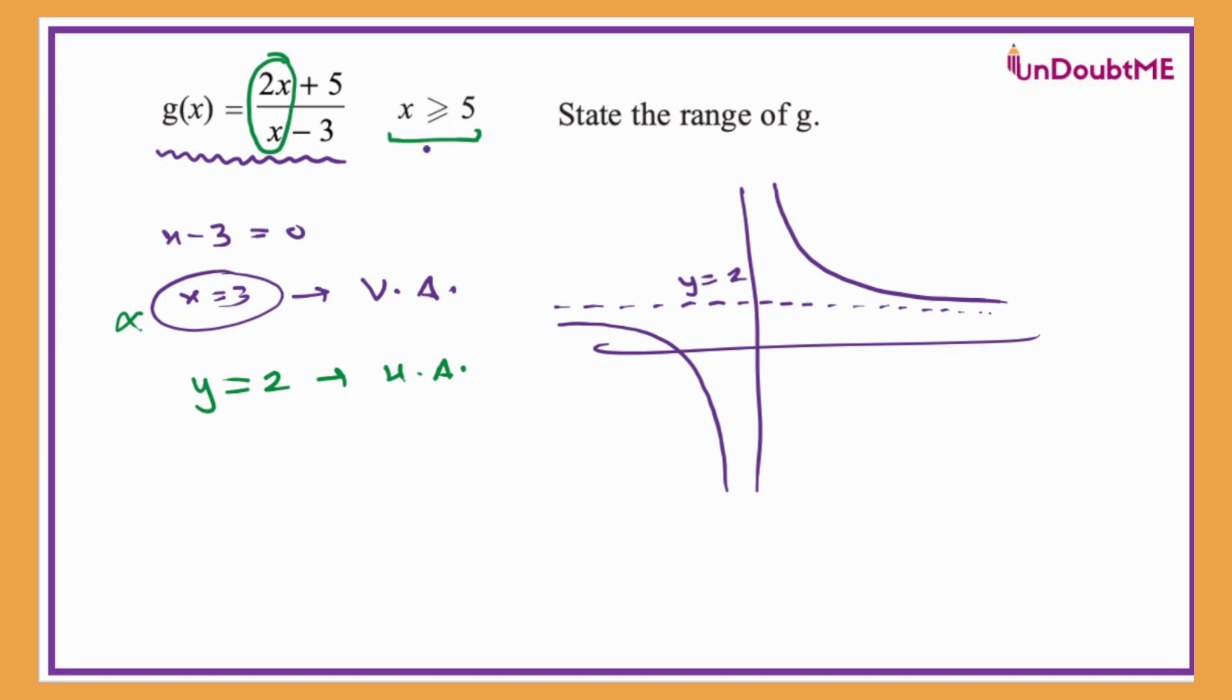Now we are looking for x greater than or equal to five, and it is a decreasing function. So it is evident that whatever is the value of this function at five, that will be the max value. After that, it will decrease up to two.